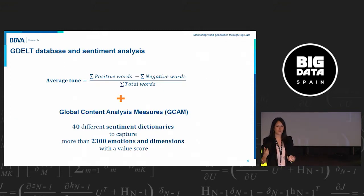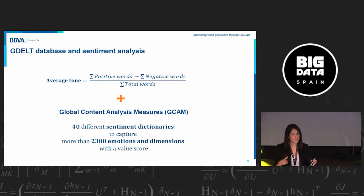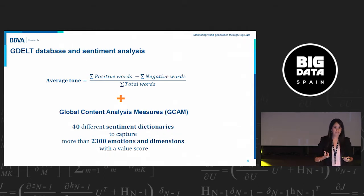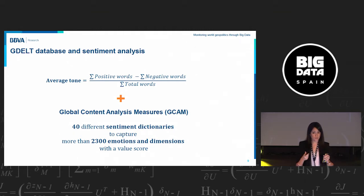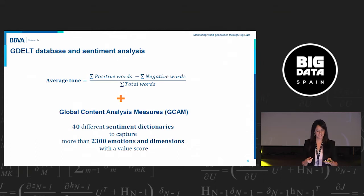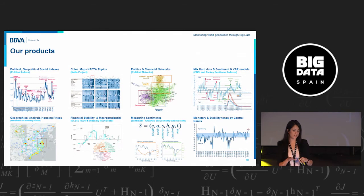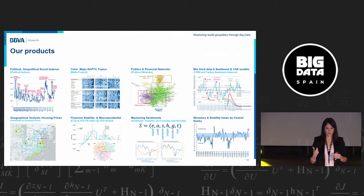In GDELT, you can also find different measures of sentiment analysis. The most common approach is to take each article about a particular topic, count words with positive and negative connotations, and compute the balance. GDELT applies more than 40 different dictionaries for this. Moreover, if you want more granular information, we can use the Global Content Analysis measures, which give you an intensity and score value based on the emotions appearing inside the article.